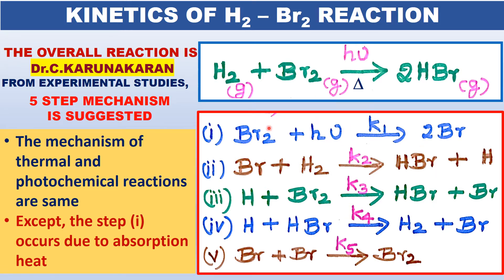From experimental studies, a five-step mechanism is proposed. In this, bromine in the presence of light dissociates to give two bromine atoms — highly unstable, highly reactive bromine atoms. In the next step, bromine reacts with hydrogen to give HBr plus a hydrogen atom. This hydrogen atom is again highly unstable.